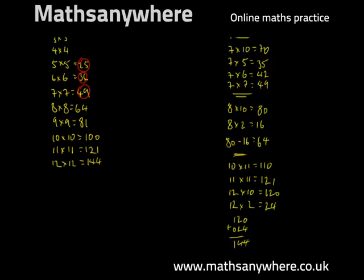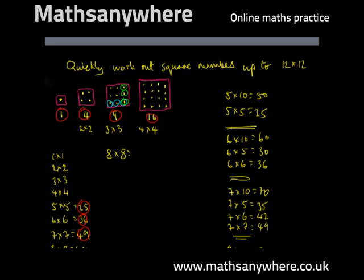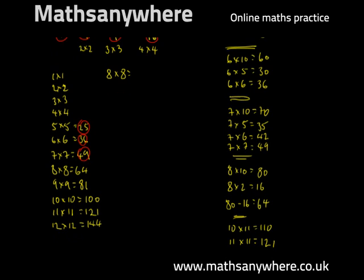And that's the first twelve square numbers. So I'll just circle them as I did for the first seven. The eighth square number is 64. The ninth is 81. The tenth is 100. The eleventh is 121. And the twelfth is 144.